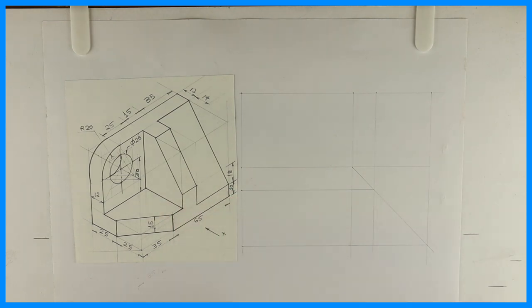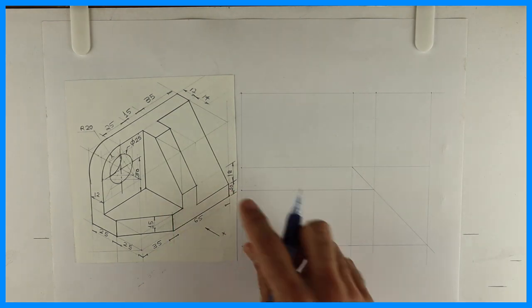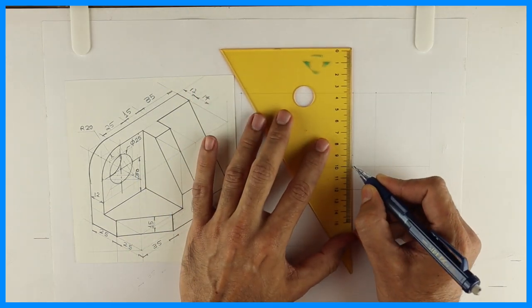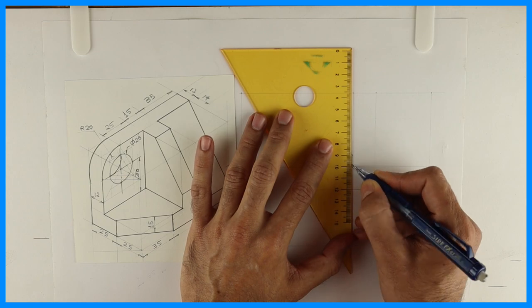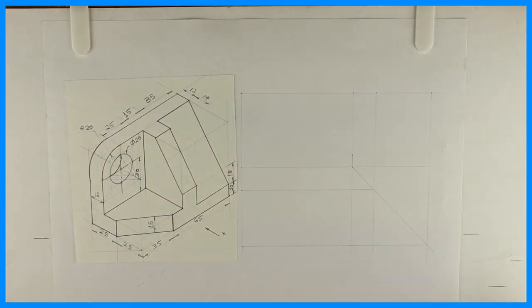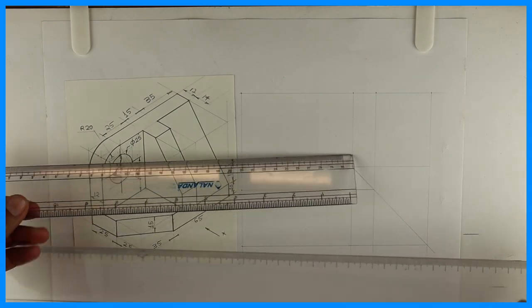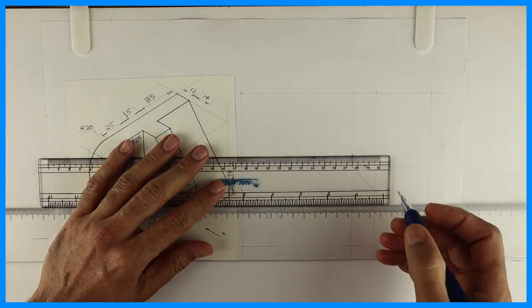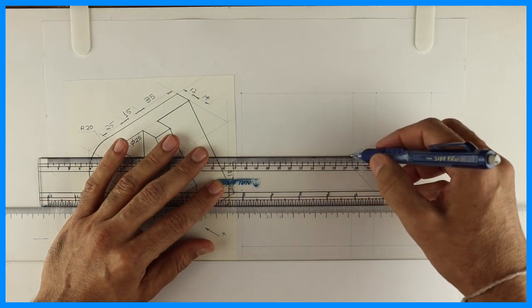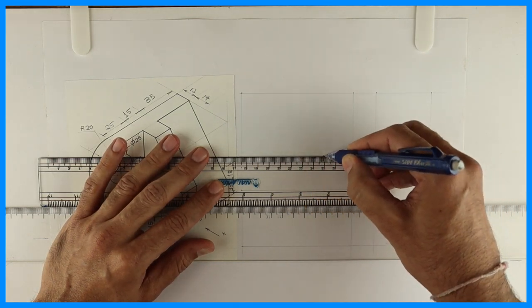In the front view you will see this part. This dimension is 10, so I will take 10. Then it is 35, so you go inside by 35.